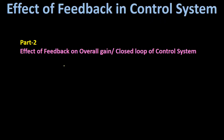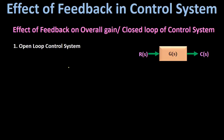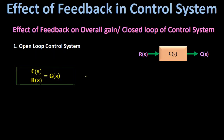In this lecture we are going to discuss the effect of feedback on overall gain or closed loop gain of a control system. First we will take the open loop control system. This is the block diagram representation where R(s) is the input response, C(s) is the output response, and G(s) is the forward path transfer function. The overall transfer function is C(s)/R(s) = G(s), which is also called the overall gain or overall transfer function of the open loop system.